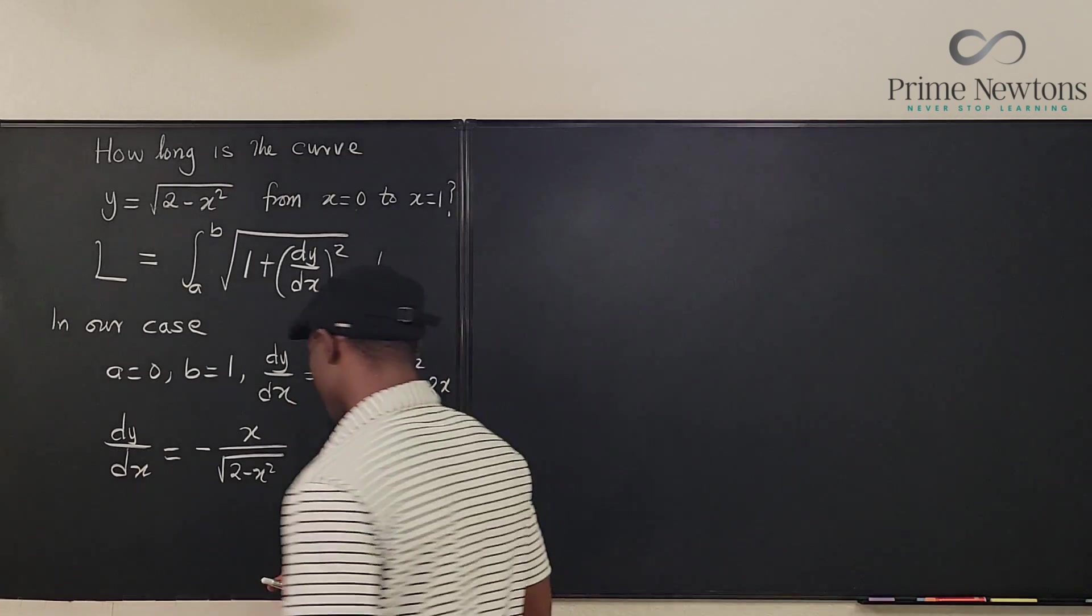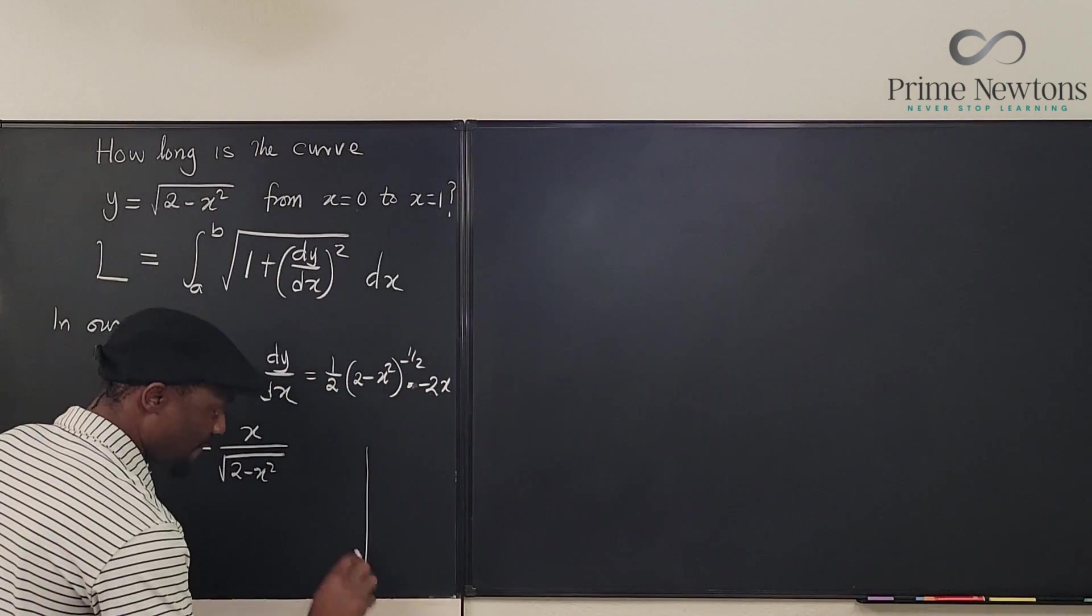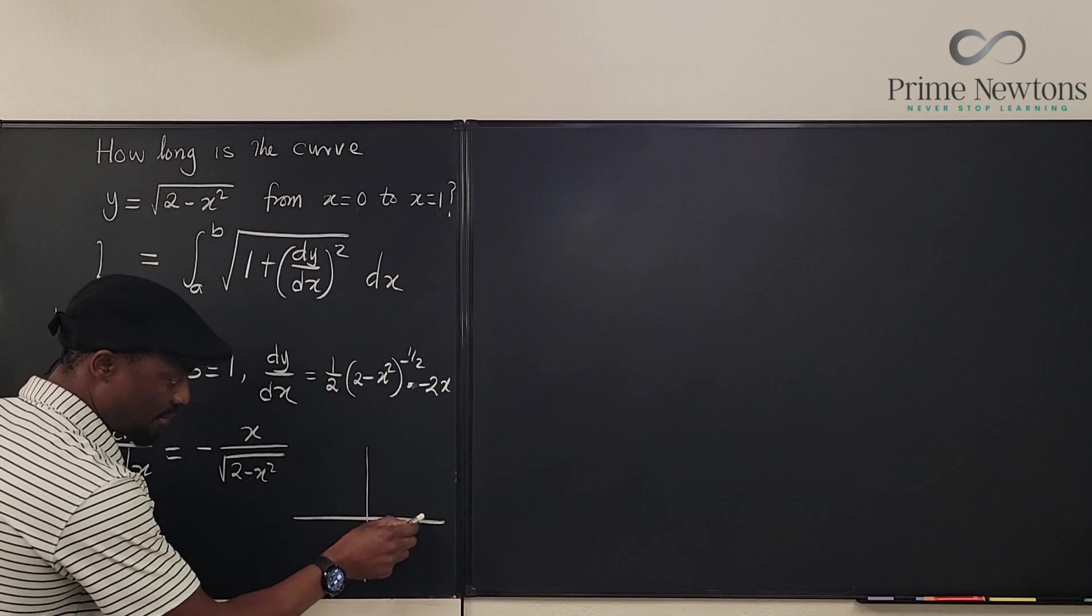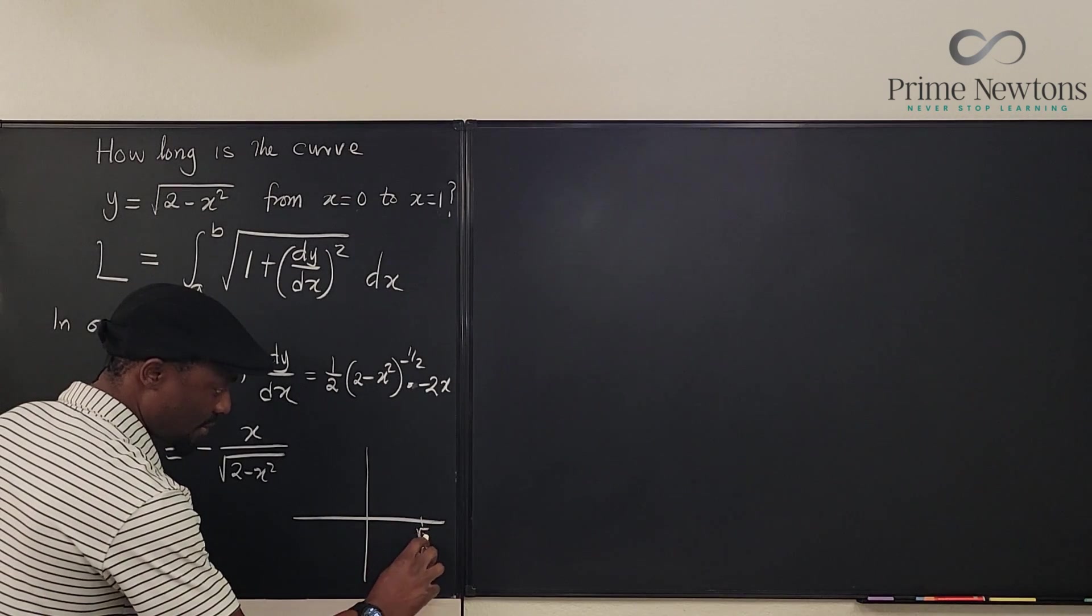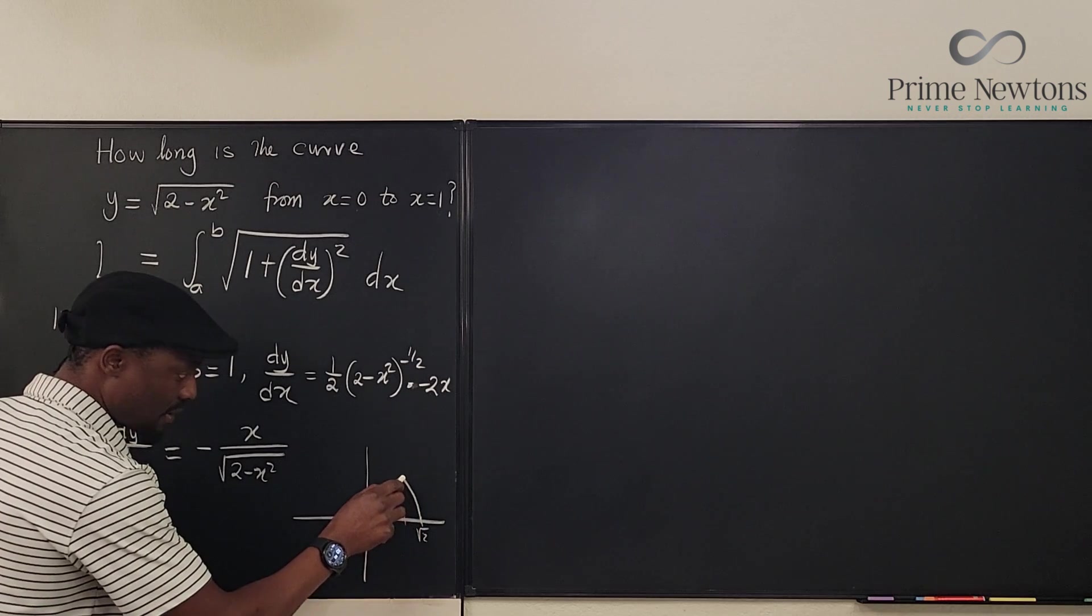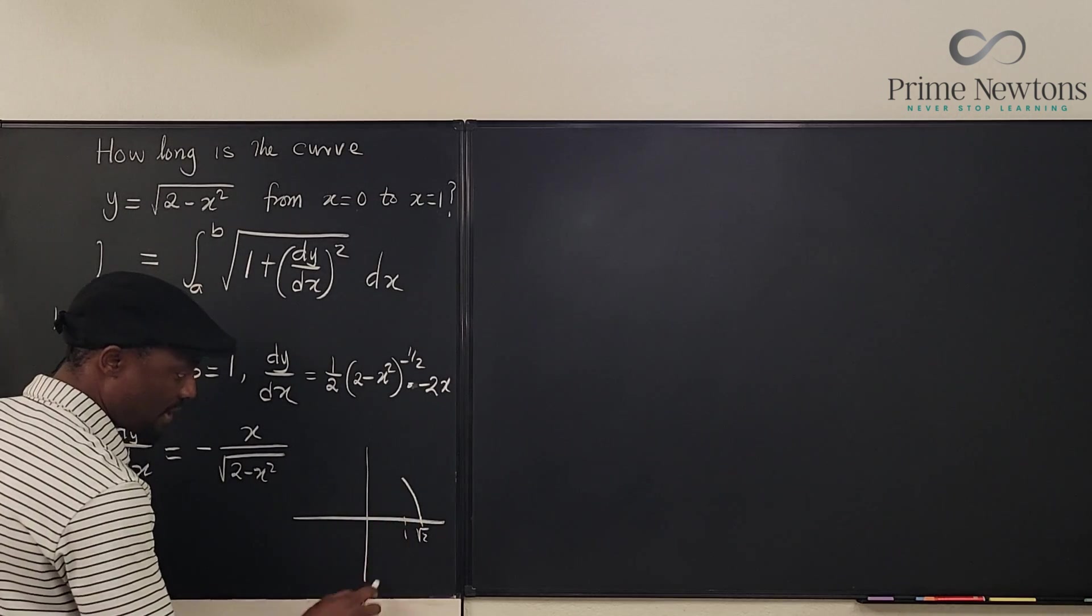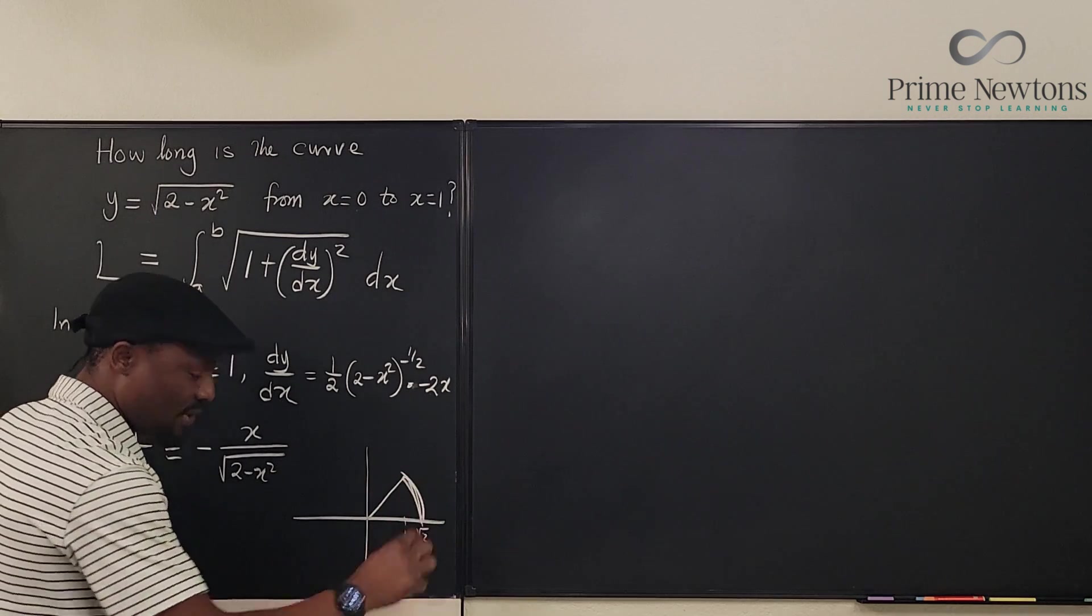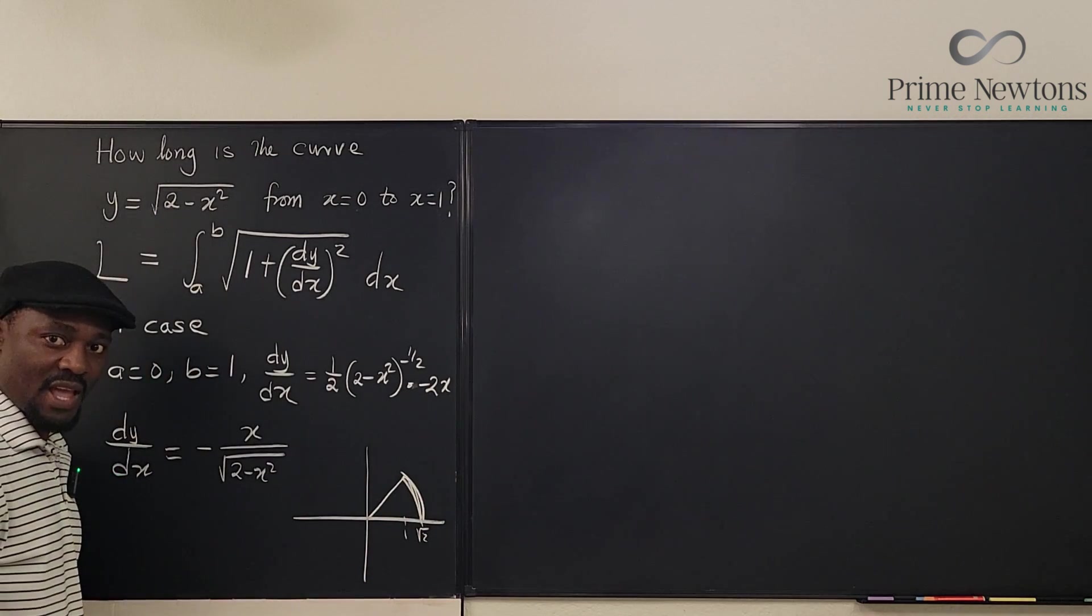So like I said before, this is what we're looking at. We're looking at a circle going from... see, the radius is square root of 2. So we're going to go from square root of 2 to 1. Something like this. This is 1. And how long is this? That's all we're looking for.